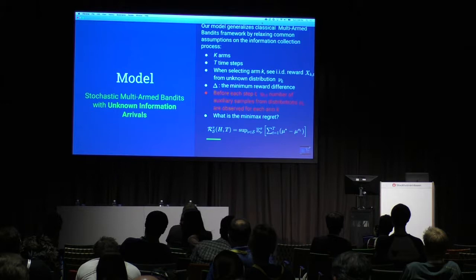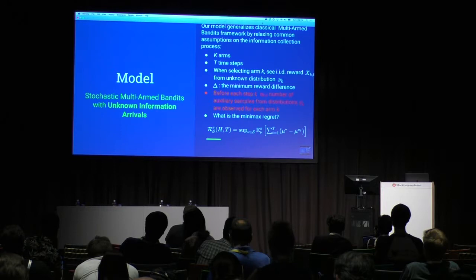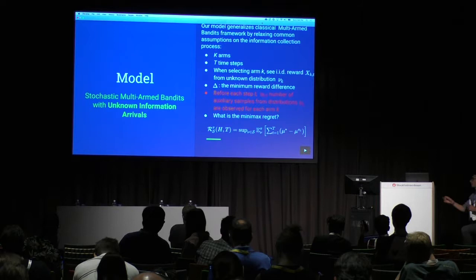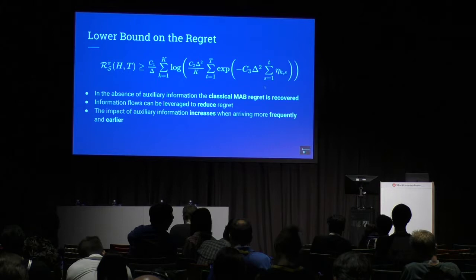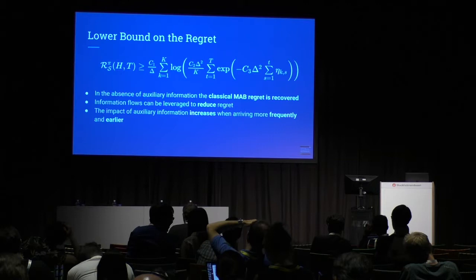We consider K arms that generate independent rewards from fixed distributions nu_k for T time steps. We assume that before each time step t, one may observe k_{td} samples from the distributions nu_k for each arm. The goal is to study the minimax regret against an oracle that repeatedly chooses the best arm. Our first result establishes a lower bound on the regret — notably a decreasing log-sum expansion of the cumulative information arrivals. This bound captures a transition between the classical log-T regret and constant regret.